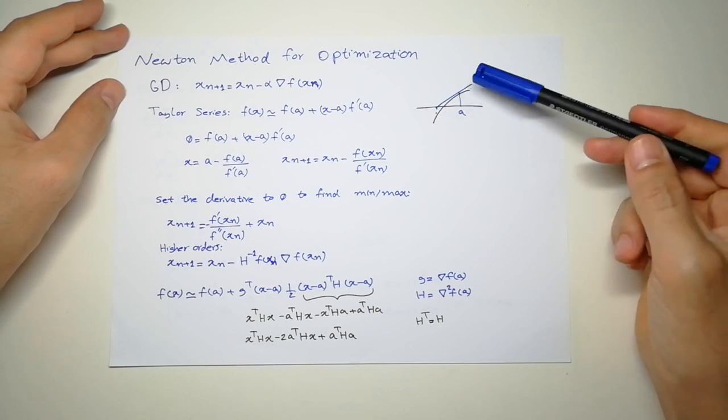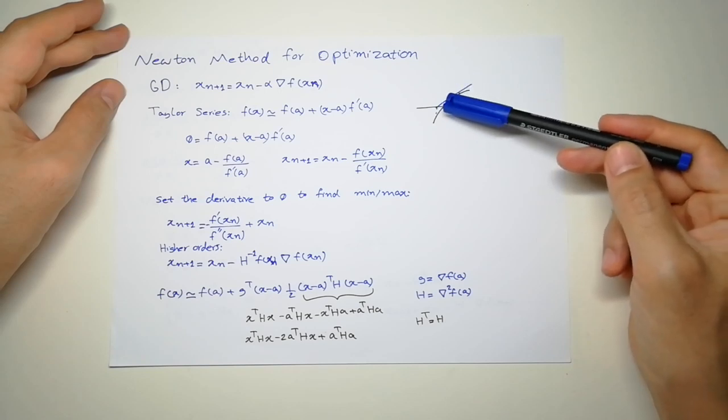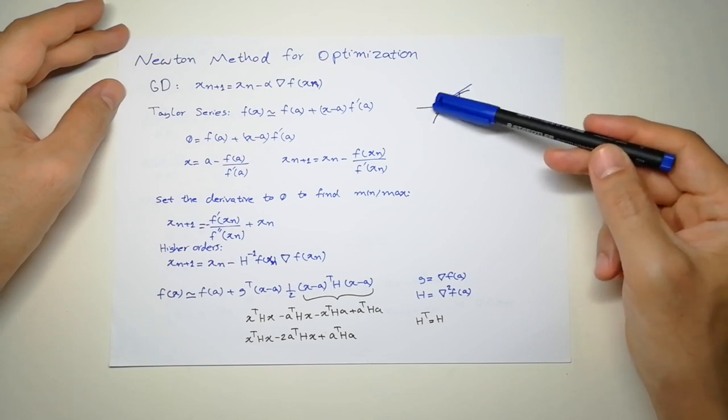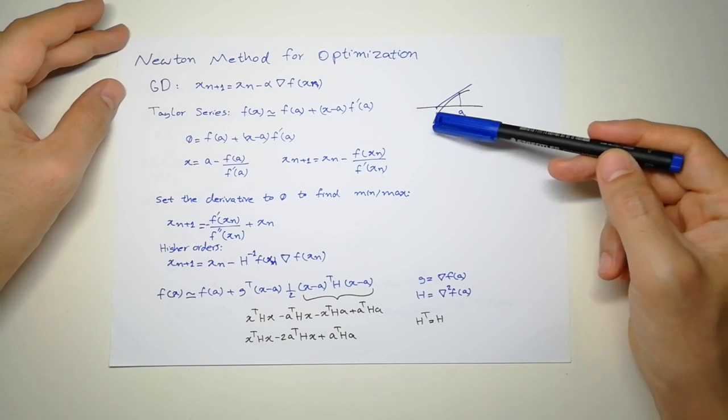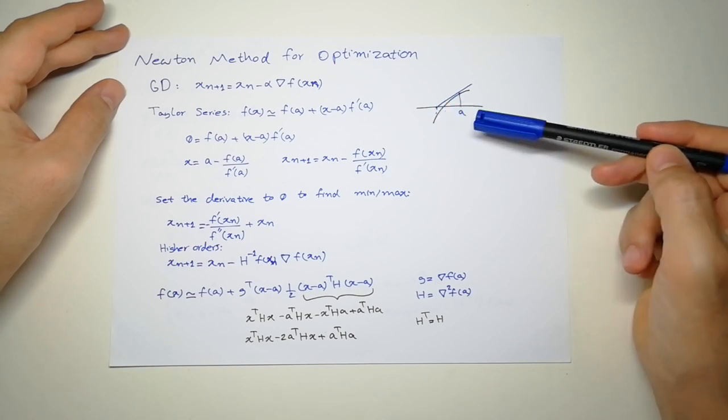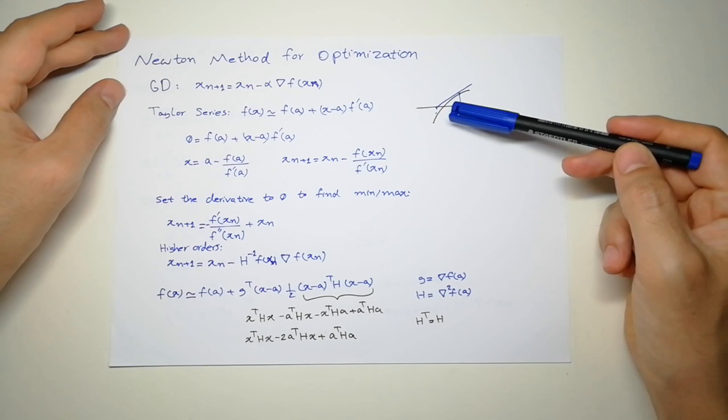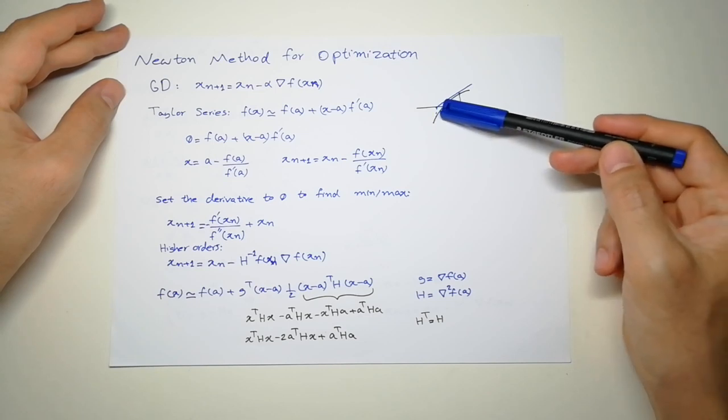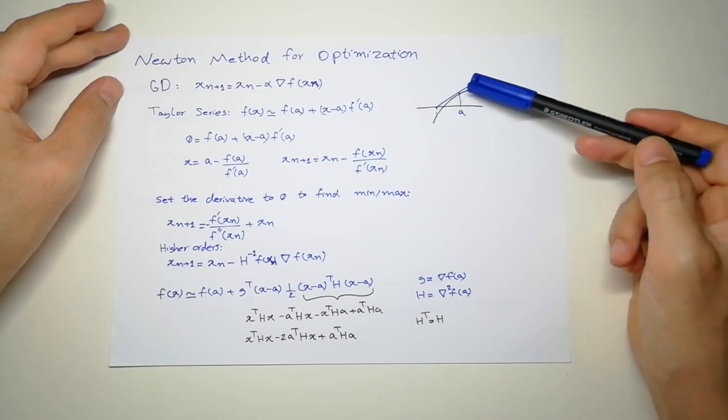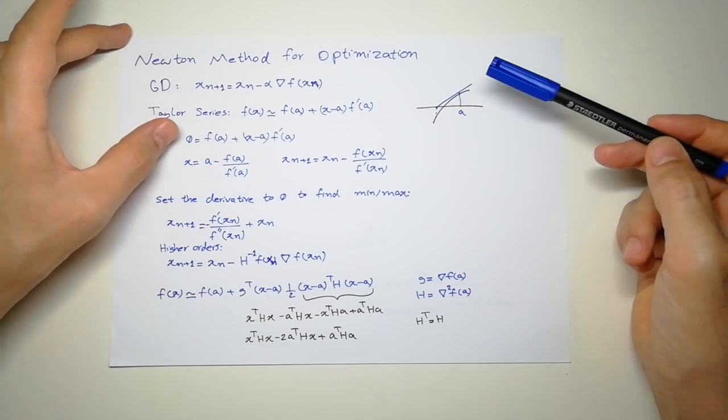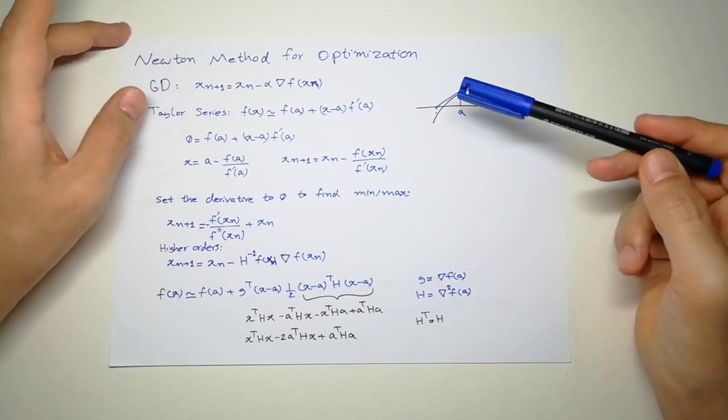But we can, as I said, we approximate it by this line. So the point that the line gets zero, the function also gets zero, which is, you can see, they're a little bit far away. But it gets close to the zero point. So if I set the first order Taylor approximation to zero,